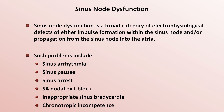A patient with chronotropic incompetence may have a normal appearing heart rate at rest. Chronotropic incompetence results in exercise intolerance and is an independent marker of cardiovascular mortality, yet it's probably under-recognized since the problem can only be detected by exercising the patient.